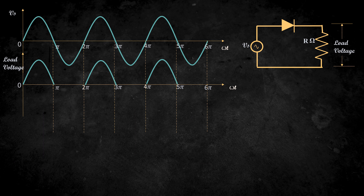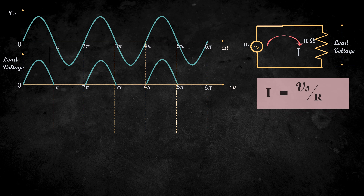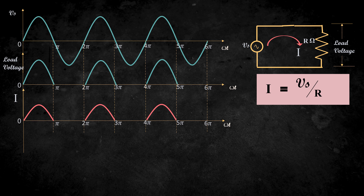We now know the supply voltage waveform and the load voltage waveform. Now, let's see the current waveform. During the positive half cycle, the diode acts as a short circuit and the current I flows through it. We know that the current I is equal to the supply voltage Vs divided by the load resistance R. Therefore, the magnitude of the current will be a little less than the supply voltage Vs, and the waveform of the current in the positive half cycle will be like this. During the negative half cycle, the diode acts as an open circuit and there is no current flow in the circuit. Therefore, during the negative half cycle, the current will be 0.